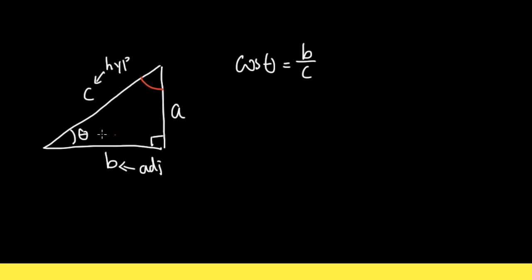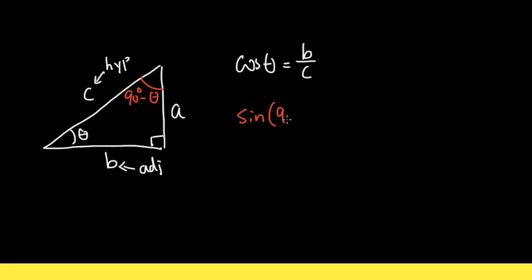Another way to do it: if this is 20, this has to be 90 minus 20, which is 70 degrees. Since I don't know how big theta is, I'm going to label this angle as 90 degrees minus theta. Now I'm going to focus on this angle — which I'm marking in red — and talk about what's the sine of this angle, which is 90 degrees minus theta.